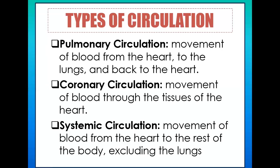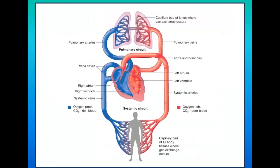For coronary circulation, this is the movement of blood throughout the tissues of the heart itself. For systemic circulation, oxygenated blood moves from the heart to the rest of the body — except the lungs — delivering oxygen to all other body parts.